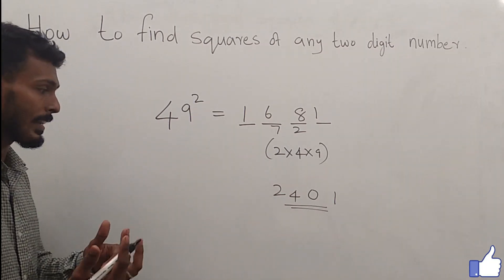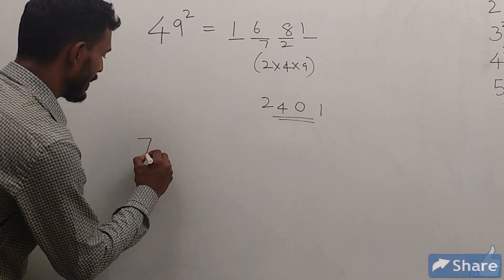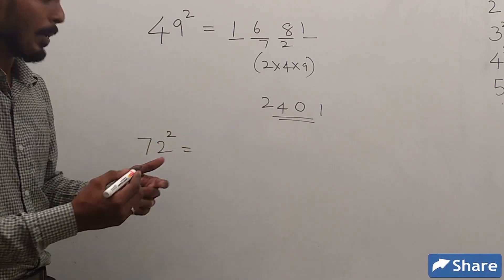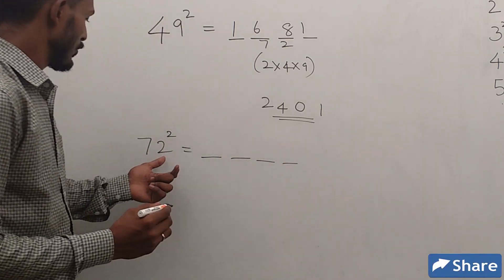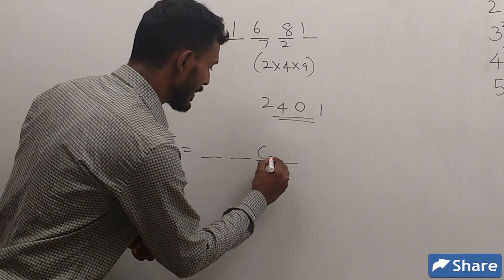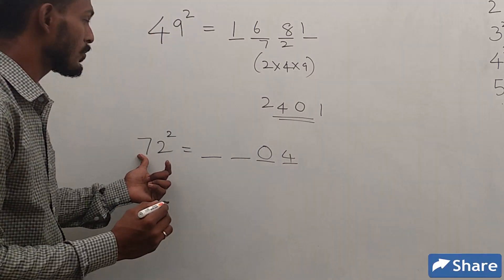Let's take another example. Let's take 72². Make 4 dashes. 2² is, write down 04. 7² is 49.